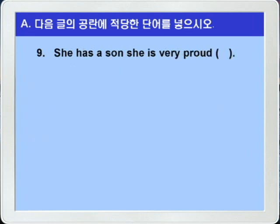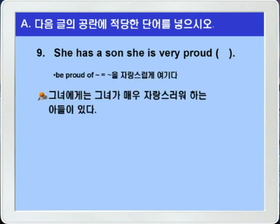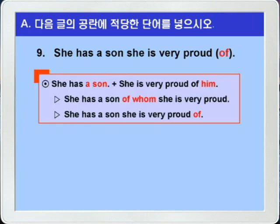9번입니다. 'She has a son she is very proud blank.' 그녀에게 아들이 있다, 그녀가 매우 자랑스럽게 여기는 — 정리해보면 그녀에게는 그녀가 매우 자랑스럽게 여기는 아들이 있다, 이런 말이 되겠습니다. proud는 be 동사와 함께 쓸 때는 'be proud of' 이런 형식으로 '뭐뭐를 자랑스럽게 여기다'라는 뜻이니까 블랭크에는 당연히 전치사 of가 들어가면 되겠죠.